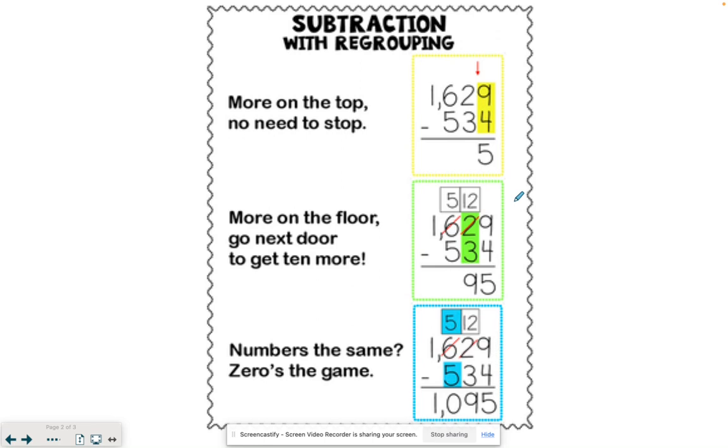So we're going to cross out the six and make it a five, only move over one next door. Sometimes people get a little tripped up and they want to go all the way to the front number. Remember, only go next door and get that ten more. So we had a two in the tens place value but we got ten more so now it became twelve.